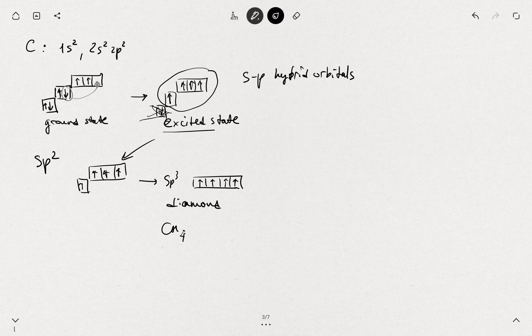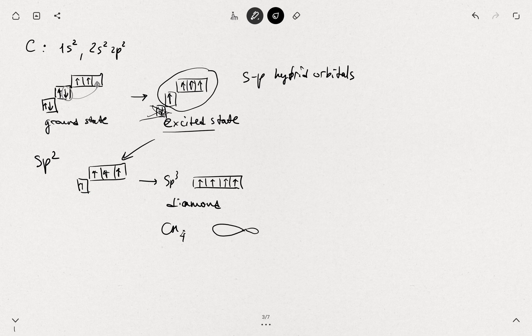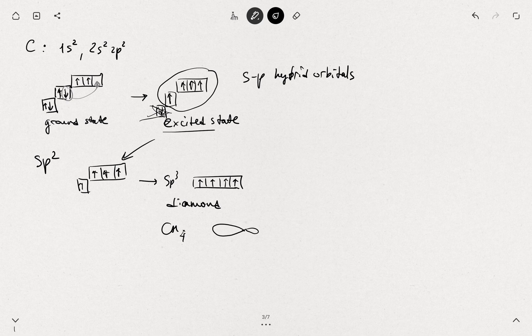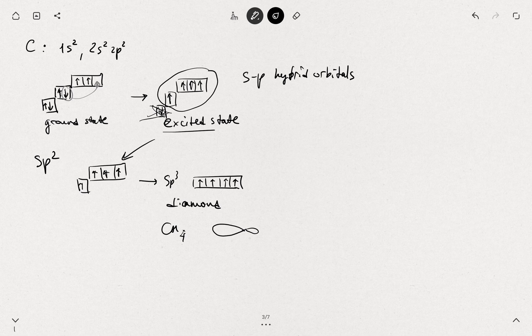And it has a tetrahedral orientation and the orbitals look like asymmetric dumbbells. And they are oriented in the tetrahedral to decrease the repulsion between the electron clouds. So the angle will be something like 109 degrees.